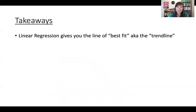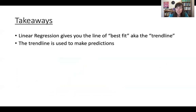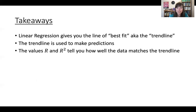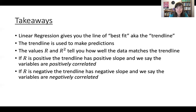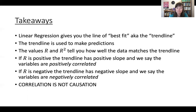Takeaways: Linear regression gives you the line of best fit for a data set — sometimes called the trend line — and this trend line is used to make predictions. The values of both R and R squared can tell you how well the data matches the trend line. If R is positive, the trend line has a positive slope, and we say the variables are positively correlated. If R is negative, the trend line has a negative slope, and the variables are negatively correlated. And for the love of God, don't ever make the mistake of thinking that correlation implies causation — because two variables can be correlated and neither one causes the other. Thank you so much. I hope you enjoyed this video and this sweater. See you later.